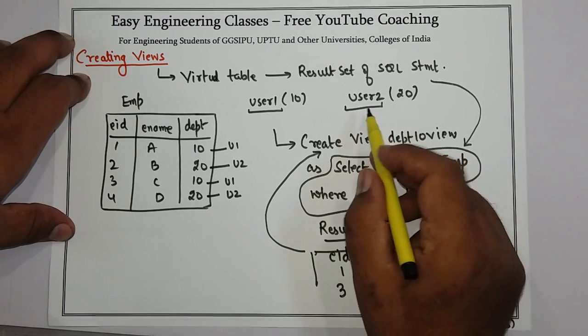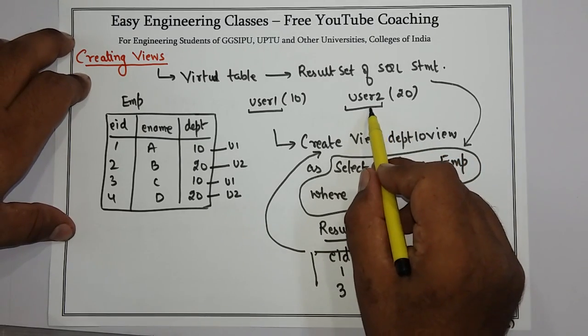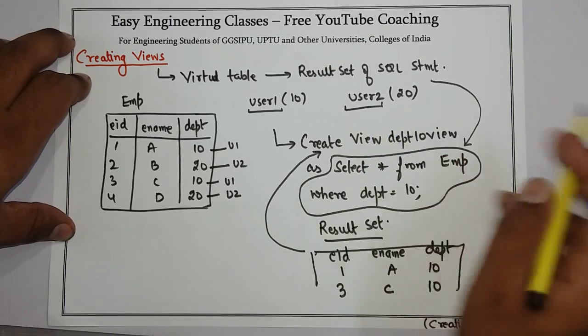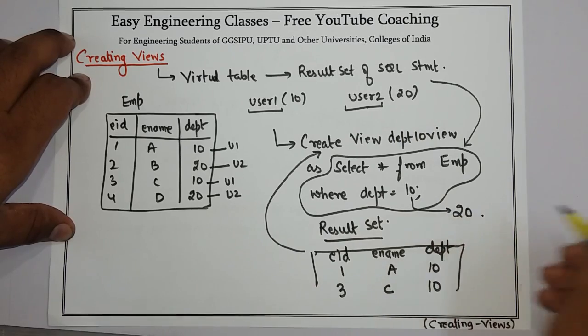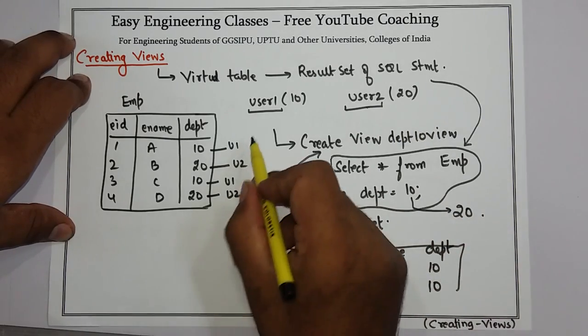Similarly, I can create a view for user2. Here I just have to change the WHERE clause to department = 20.